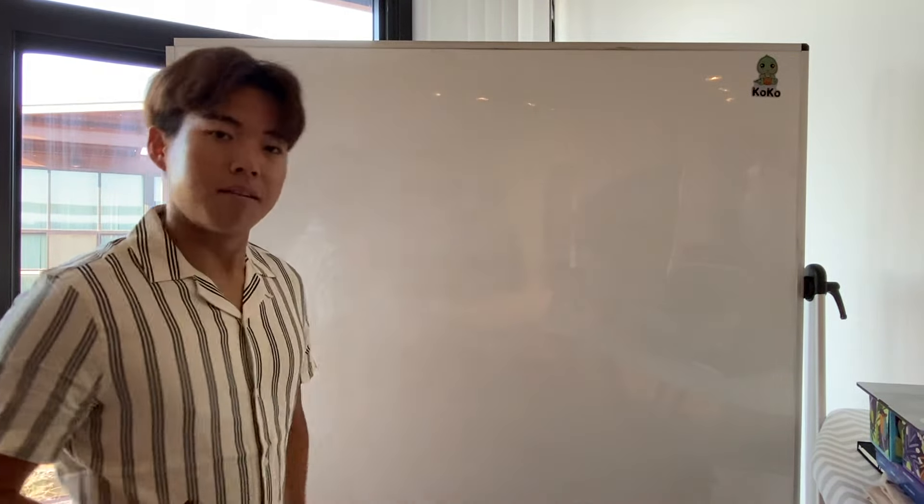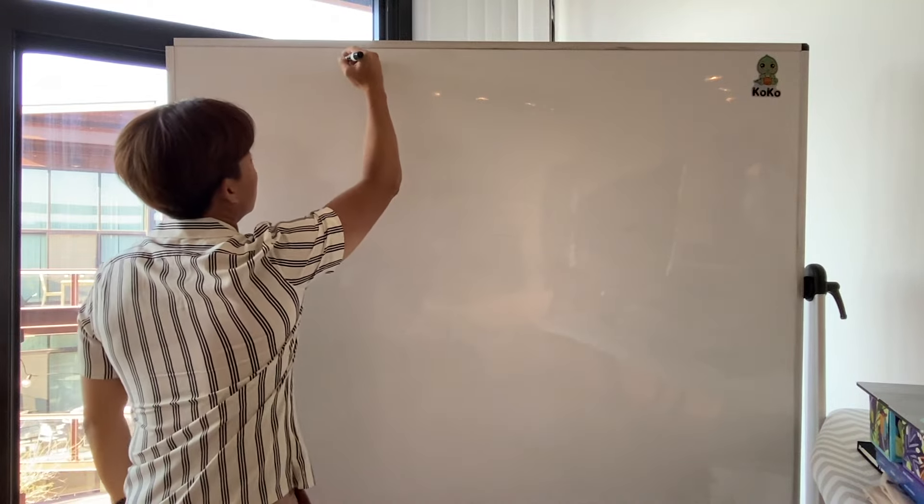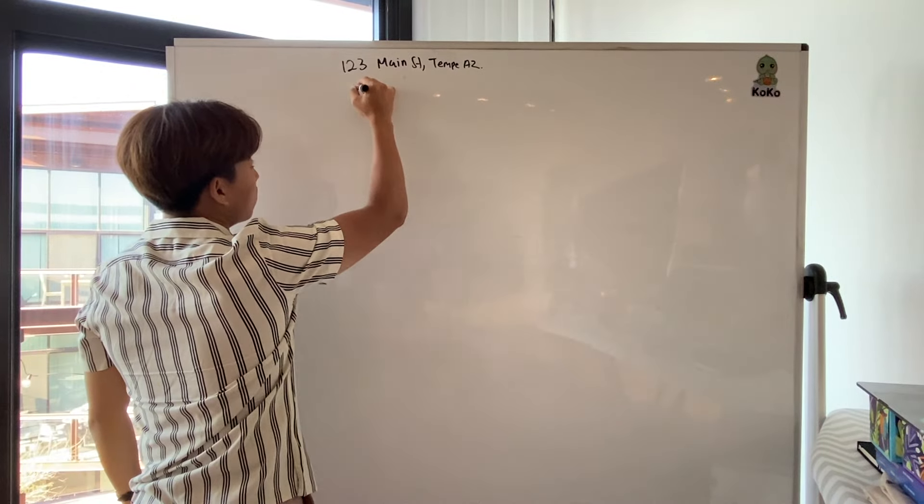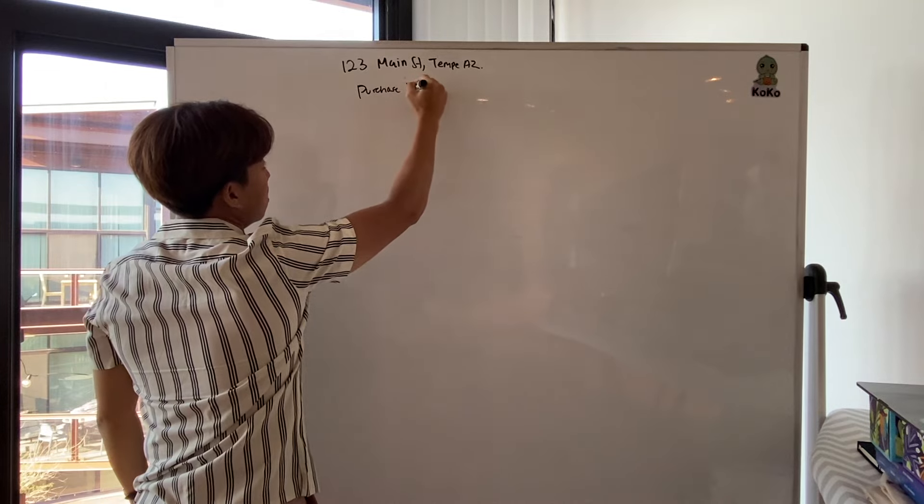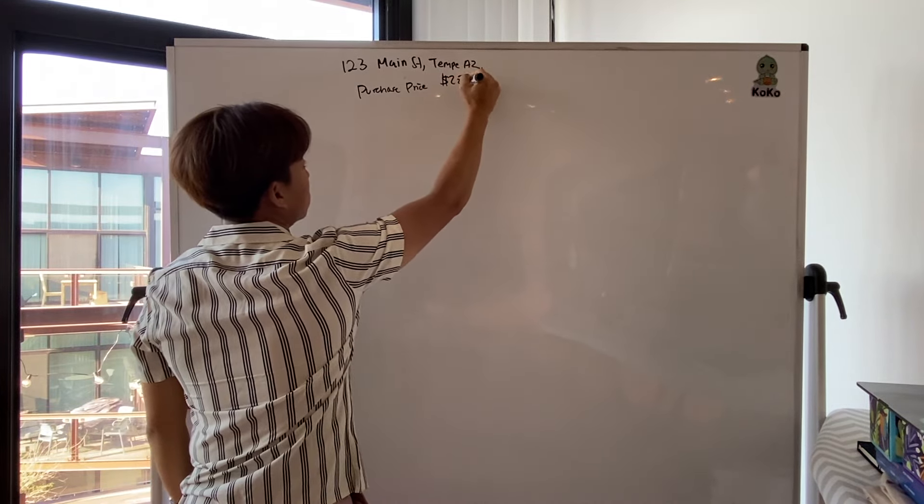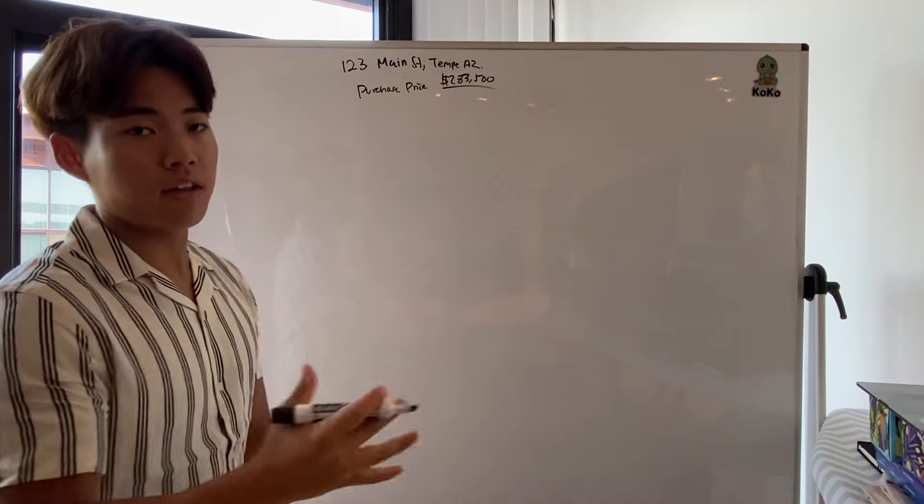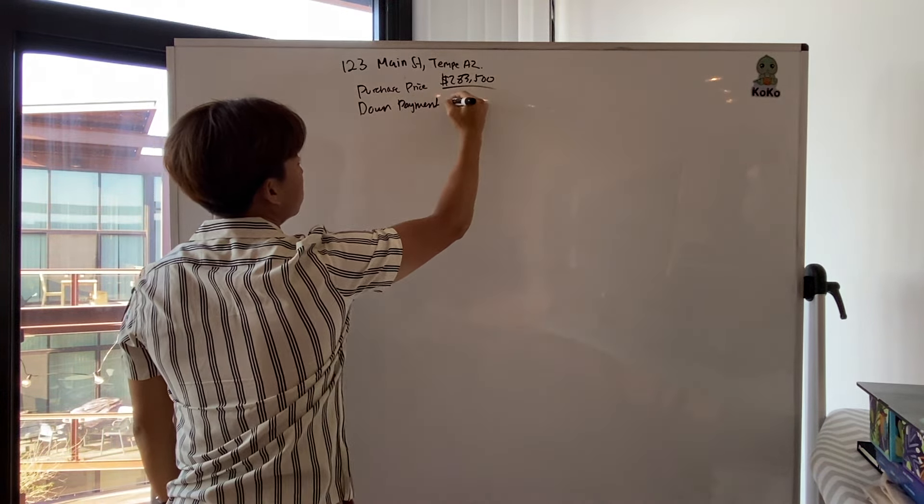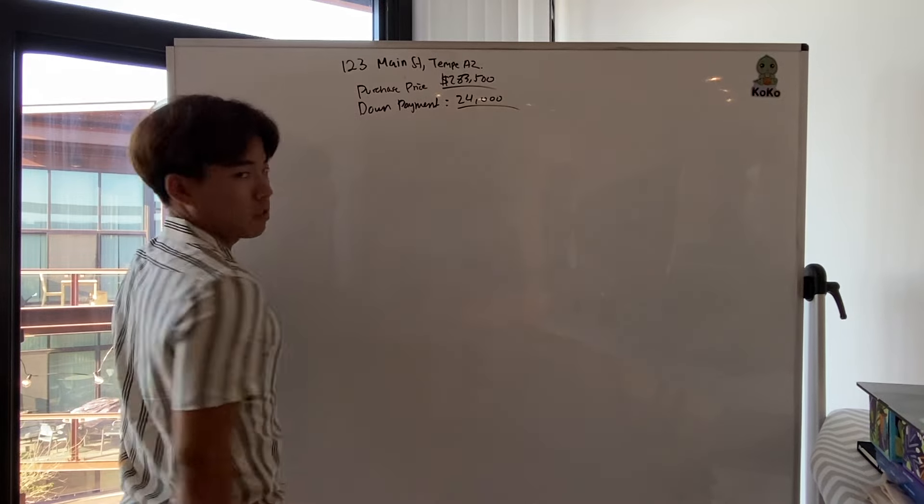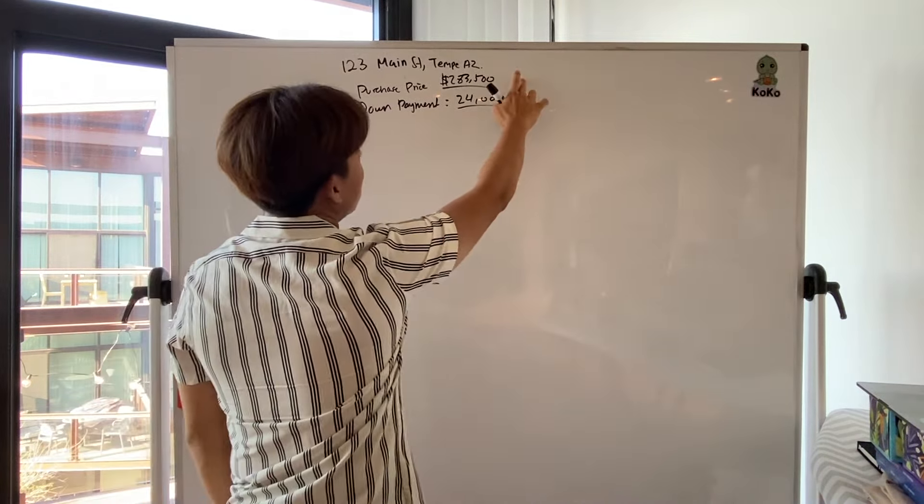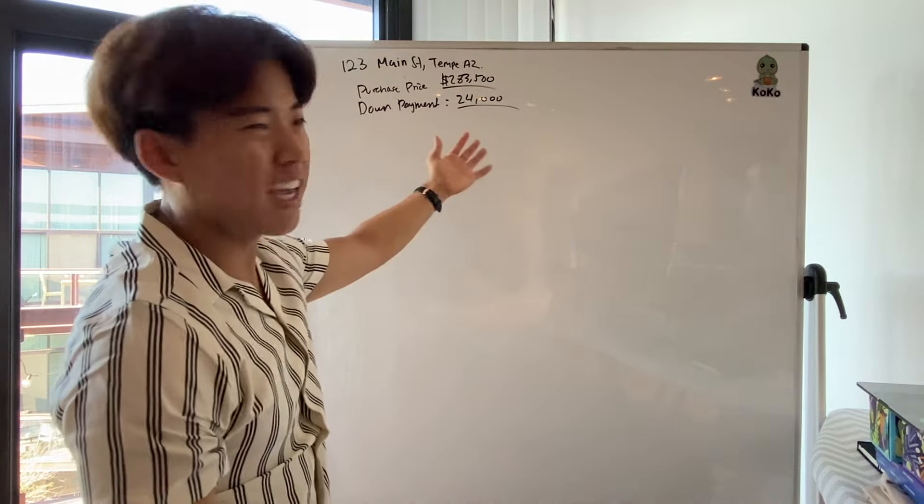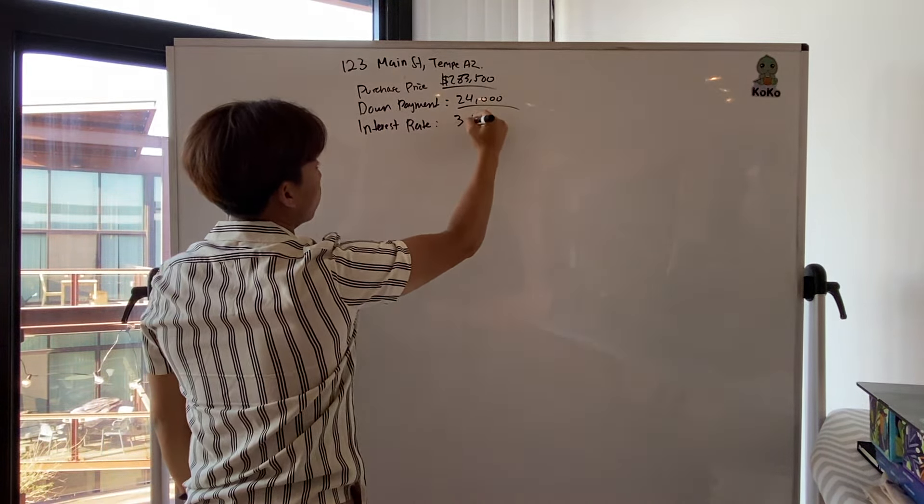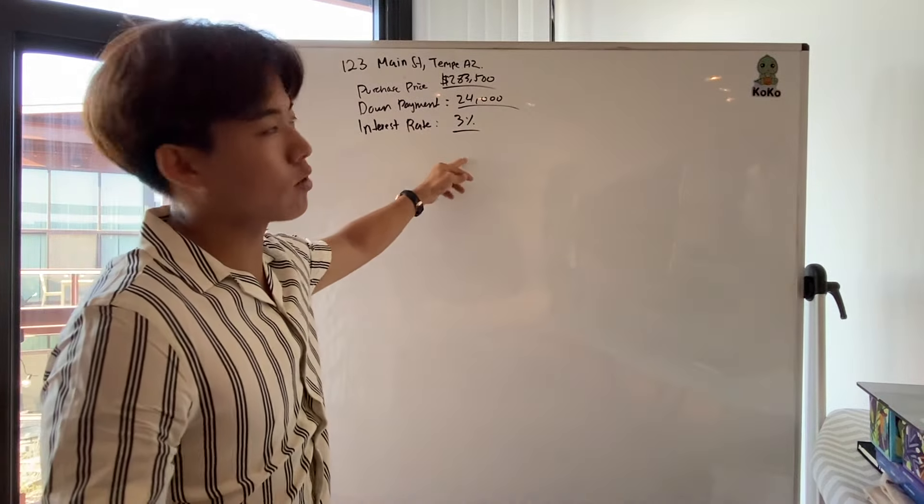So the address of the house, I'm not giving you the address of the house. I'm going to say 123 Main Street. This is not the address of the house. The homeowner was asking for a purchase price of $283,500. That's how much the homeowner thought the house is worth. And he says, I want a down payment of $24,000. I'm like, pretty reasonable. That's only, if you do the math, I think that's like 8 or 9%. And then the interest rate, you will not believe it. In 2024, we're bringing a 3% interest rate on this house.